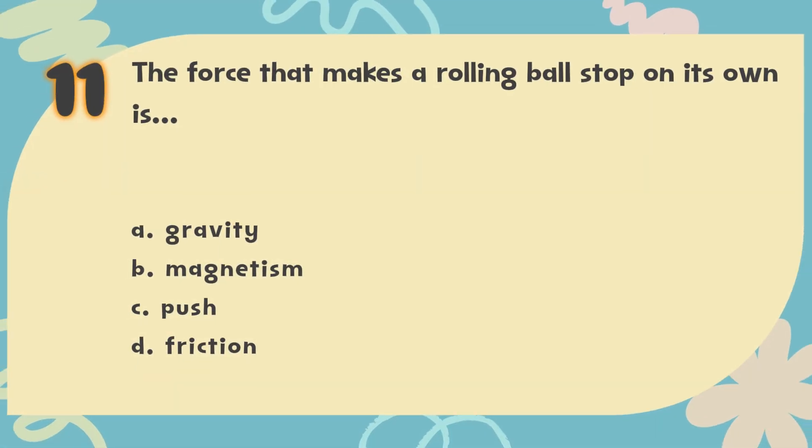The correct answer is D. Friction. Friction is a force that happens when two things rub against each other. It slows down moving objects, like the ball rolling on the floor.